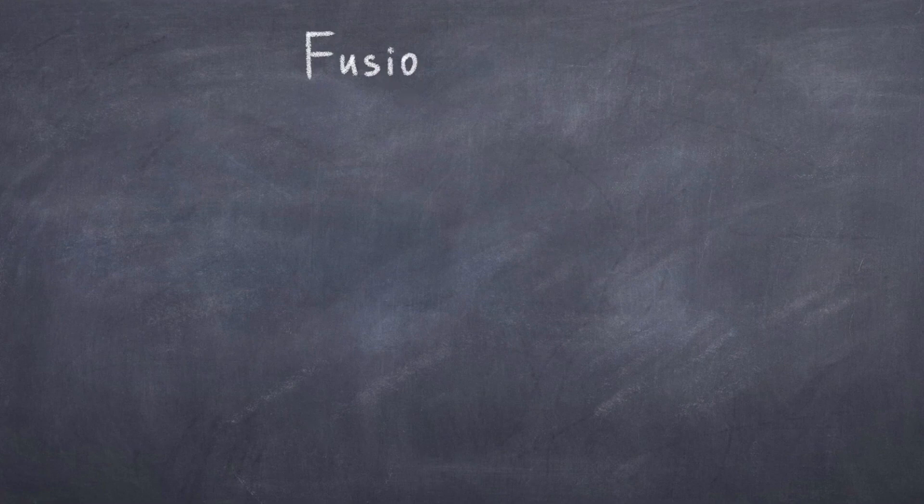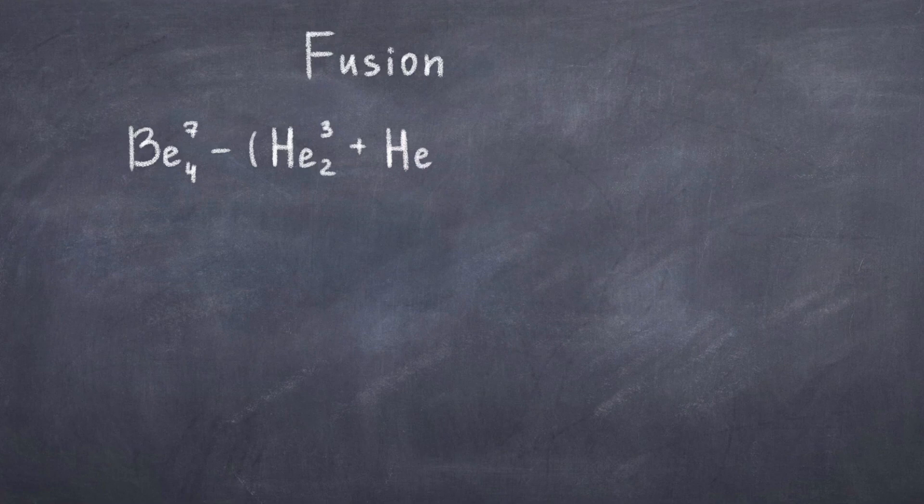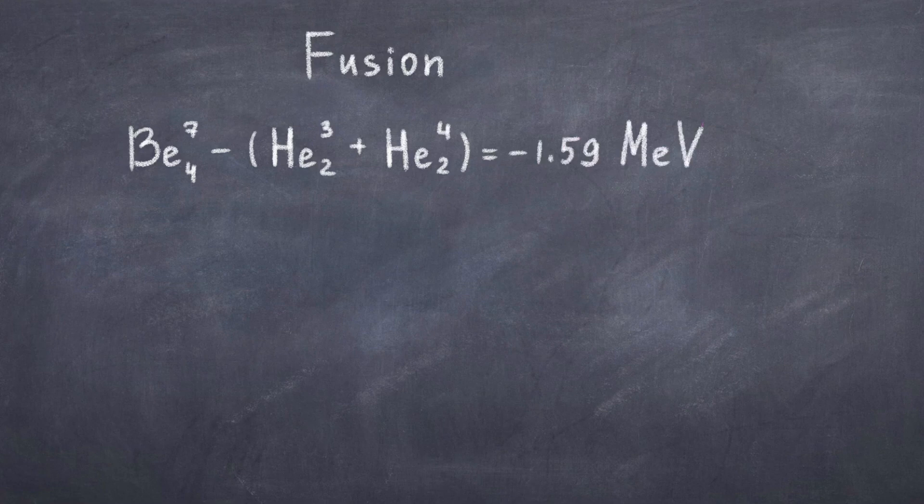Let's consider a simple fusion process of two different helium atoms, helium-3 with one neutron and helium-4 with two neutrons as before. If all the protons and neutrons fuse into a new atom, we get beryllium-7. If we again consider the mass of beryllium and subtract the mass of the two helium atoms, we get beryllium-7 minus the mass of helium-3 plus the helium-4 atom. Then the result is minus 1.59 mega electron volt.